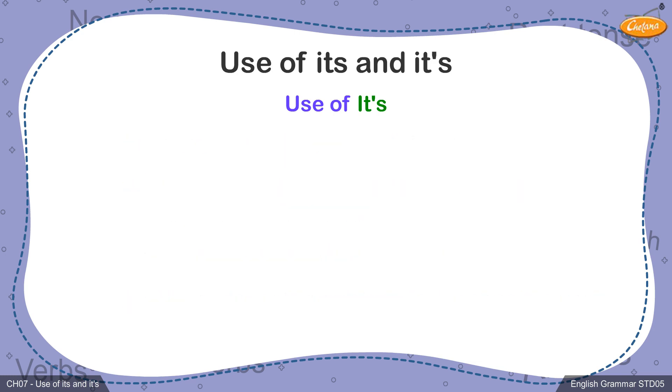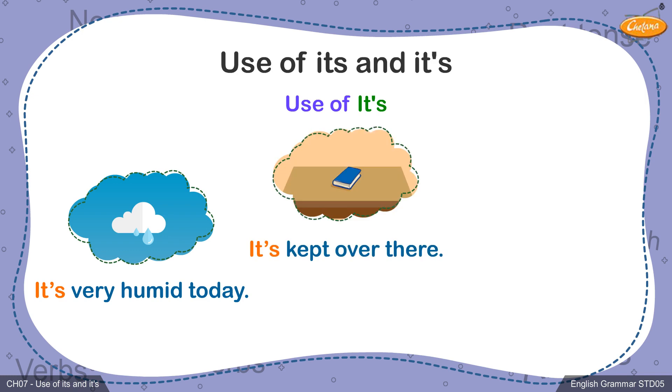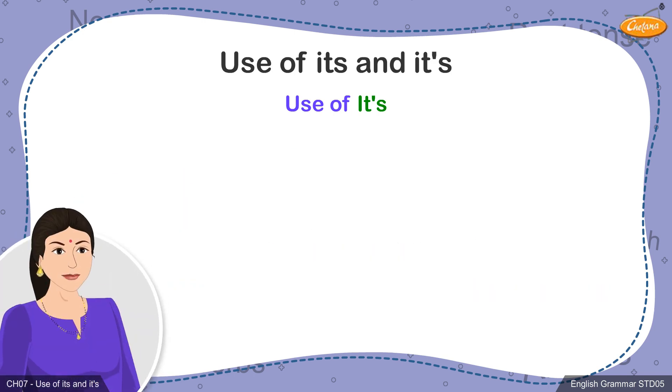Let's now have a look at how these can be used in sentences. 1. It's very humid today. 2. It's kept over there. 3. It's only 11 pm. The subject in each of these sentences is it and the verb is is, as it's has been used in every sentence. Similarly,